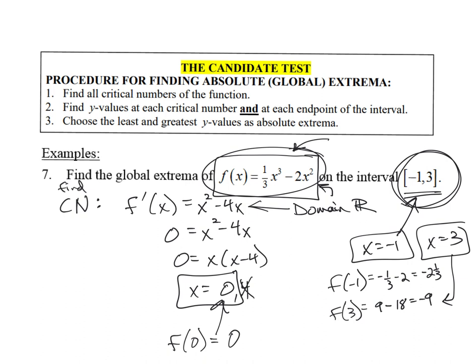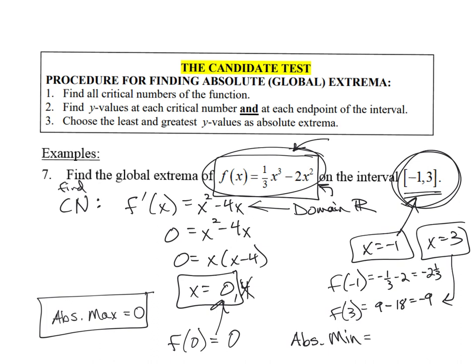f(0) = 0. f(−1) = −1/3 − 2 = negative 2 and 1/3. f(3) = 9 − 18 = negative 9. The absolute maximum is 0, and the absolute minimum is negative 9. Remember: if they ask what is the minimum, that's the Y value. If they ask where does it occur, that's the X value of 3. If they ask what's the point, you give the entire point (3, −9).